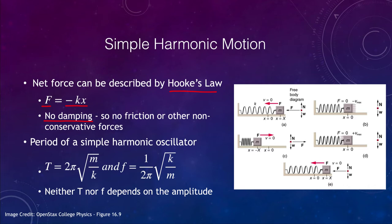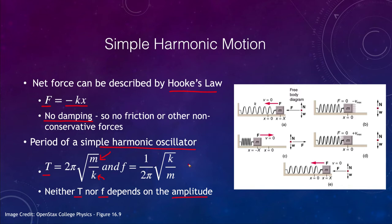In an ideal case, the period of a simple harmonic oscillator T is given by two pi times the square root of m, its mass, divided by k. We find that it only depends on the mass and the force constant. Neither T nor frequency f depend on the amplitude, as long as we are looking at relatively small amplitudes. The period remains exactly the same regardless of how far the spring is oscillating back and forth.